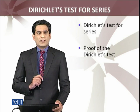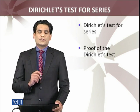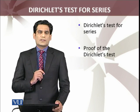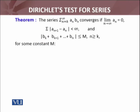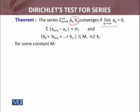The Dirichlet test is for deciding about the convergence and divergence of the series. The series summation from k to infinity of aₙbₙ converges if the following conditions hold. The series terms are two products; we have divided into aₙ and bₙ. Now the first condition is that the limit as n approaches infinity of aₙ equals 0.